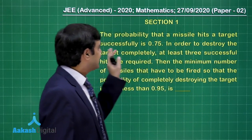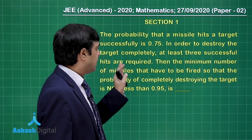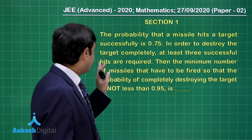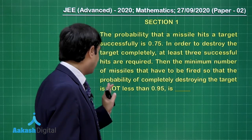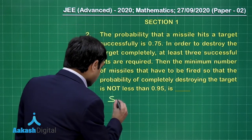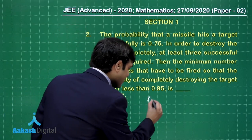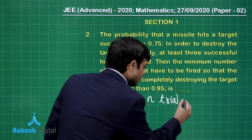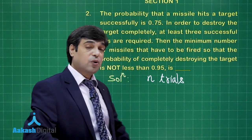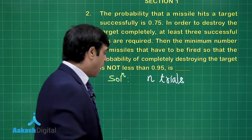Question 2: The probability that a missile hits a target successfully is 0.75. To destroy the target completely, at least three successful hits are required. Find the minimum number of missiles that must be fired so that the probability of completely destroying the target is not less than 0.95. We consider the target being destroyed in n trials. The target is NOT destroyed only if there are zero, one, or two hits.